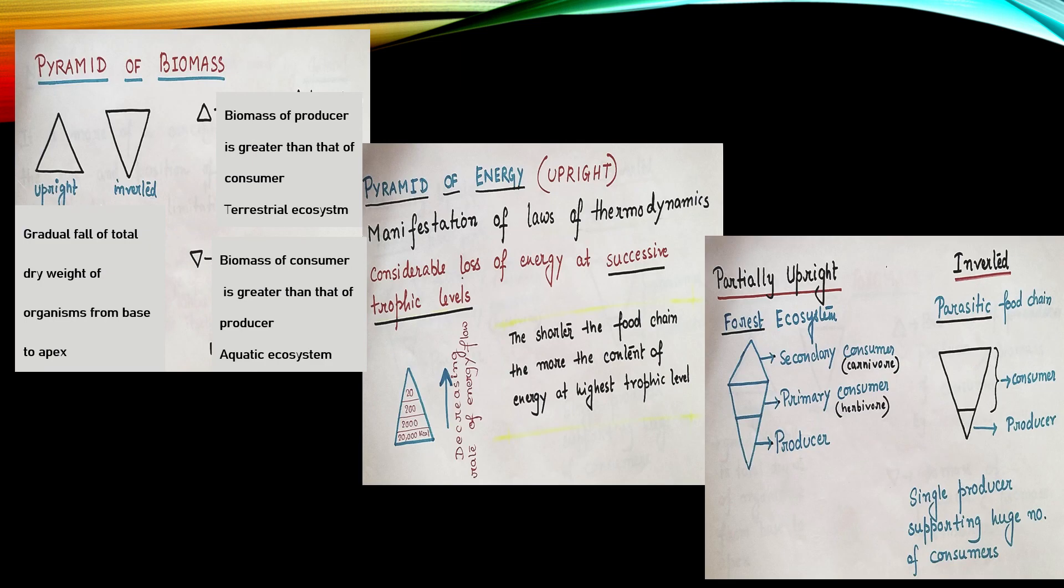Next here we have an array of different types of pyramids. First we'll be talking about pyramid of biomass. Pyramid of biomass can be of two types, either an upright one or an inverted one. In an upright one we see the biomass of producer is greater than that of consumer. Very popular example is terrestrial ecosystem.